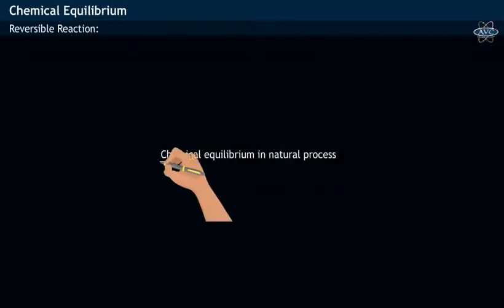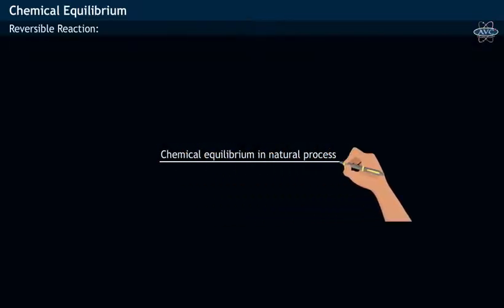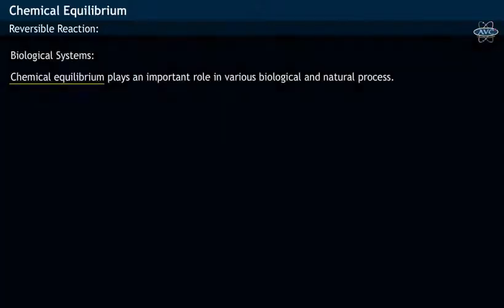Chemical Equilibrium in Natural Processes. Generally, chemical equilibrium plays an important role in various biological and natural processes.